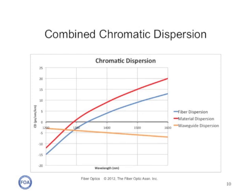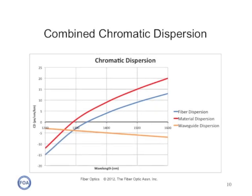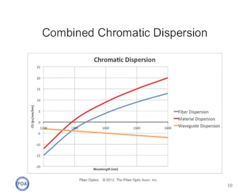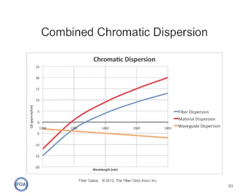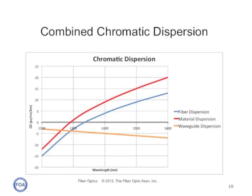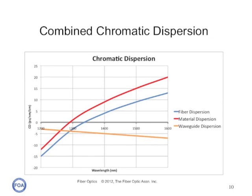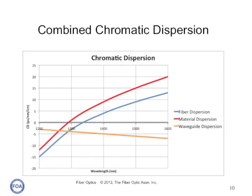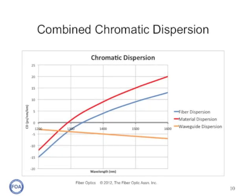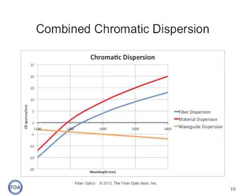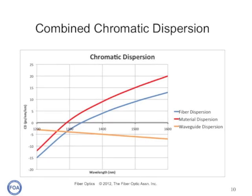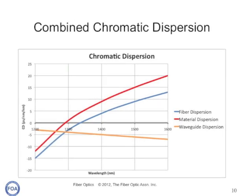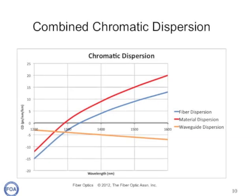Dispersion is one of the factors used in engineering fibers. Material and waveguide dispersion have opposite variations with wavelength, so careful design of the fiber materials and index profiles allows the fiber to have a zero dispersion wavelength. On either side of that wavelength, dispersion increases. The engineering of chromatic dispersion is a function of the application of the fiber, and as a result, different single mode fibers have been developed for the requirements of specific applications. The combined chromatic dispersion — a combination of material dispersion and waveguide dispersion — will be what is measured for the fiber.